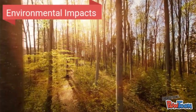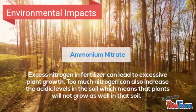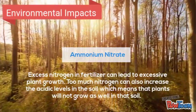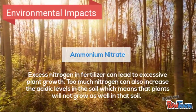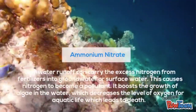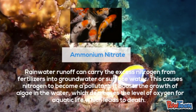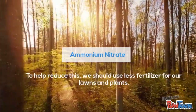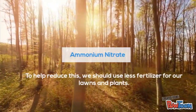So there are environmental impacts for these chemicals. For ammonium nitrate, excess nitrogen in fertilizers can lead to excessive plant growth. Too much nitrogen can also increase the acidic levels in the soil, which means that plants will not grow as well in that soil. Also, rainwater runoff can carry the excess nitrogen from fertilizers into groundwater or surface water, causing nitrogen to become a pollutant. It boosts the growth of algae in the water, which decreases the level of oxygen for aquatic life, leading to death. In order to reduce the impact, we should use less fertilizer for our lawns and plants.